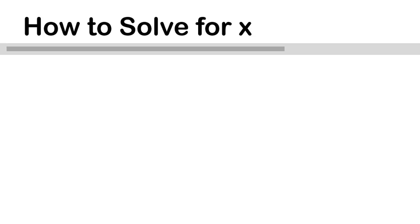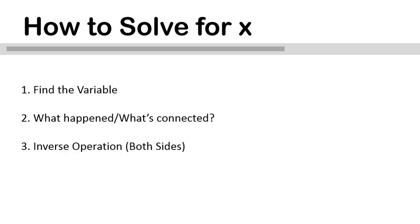So now that we know what types of decimals we're going to see, it's time to actually solve for our variable of x. We're going to follow three steps for solving the equations. We are going to find our variable, ask what happened to our variable or what is connected to our variable, and then do the inverse operation on both sides. You might have seen these steps before, because they're the same steps we've used. And they're the same steps that we will continue to use as we solve all the equations. It's really important that we become very good at using these steps. Let's do it.